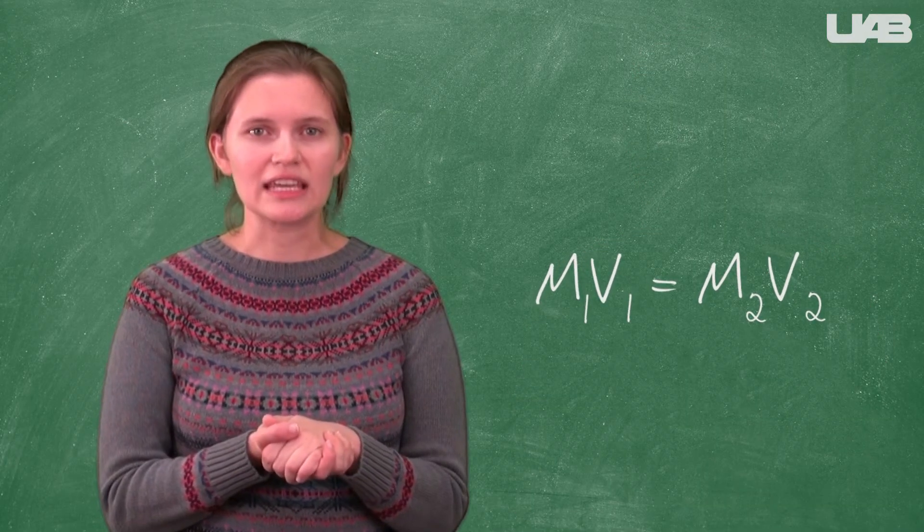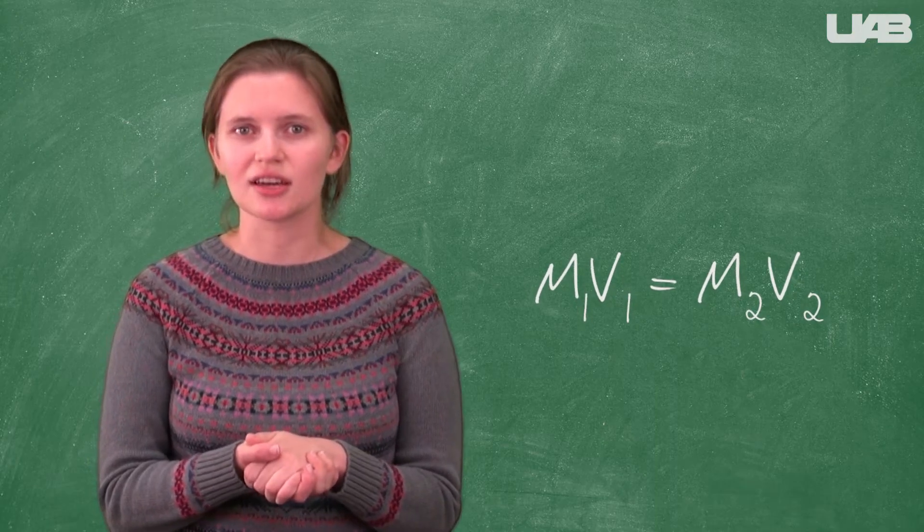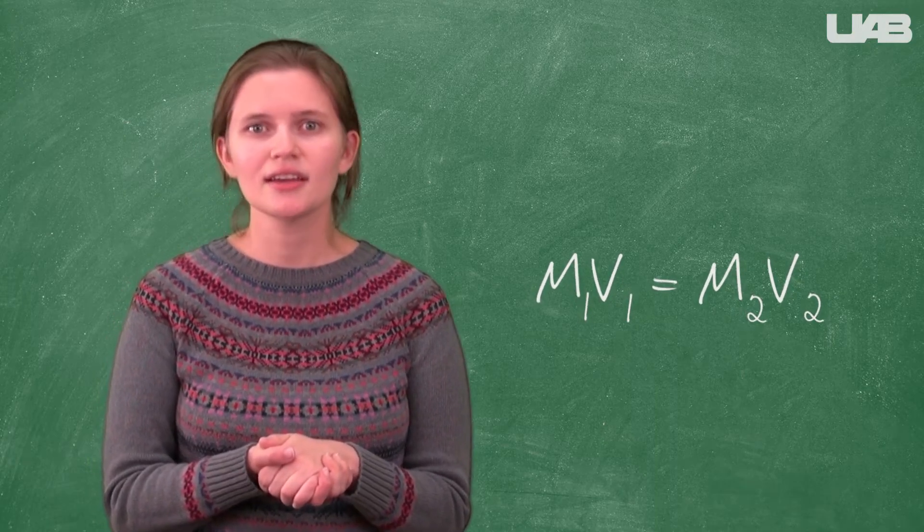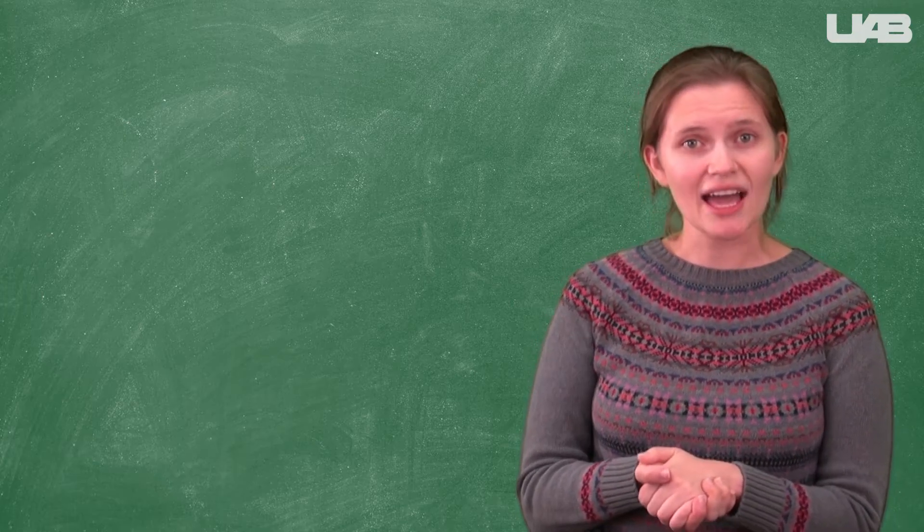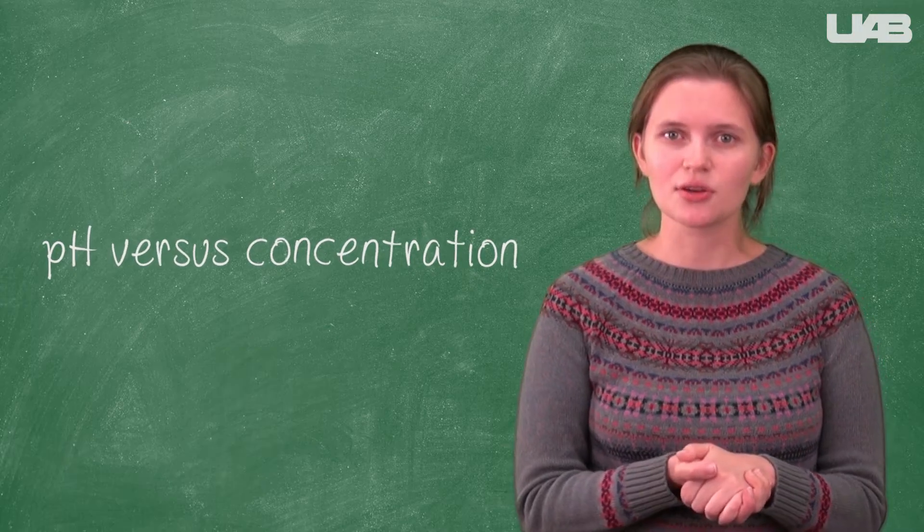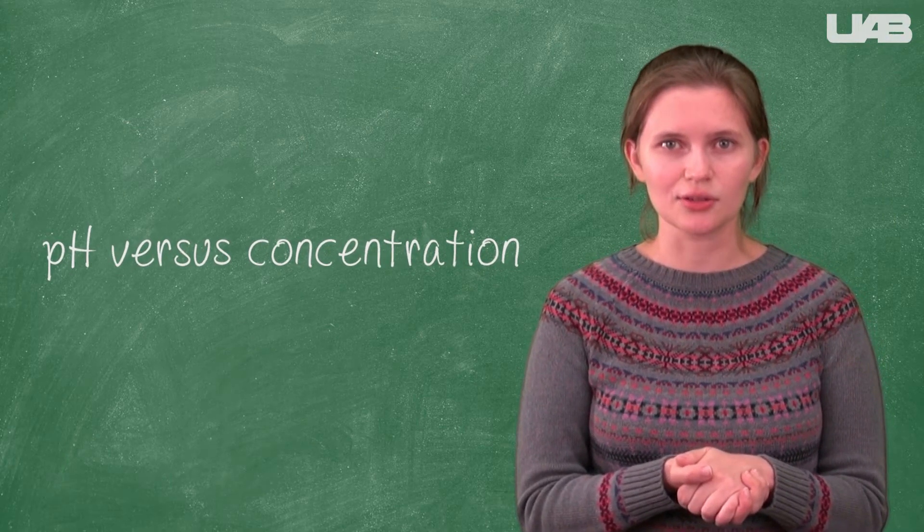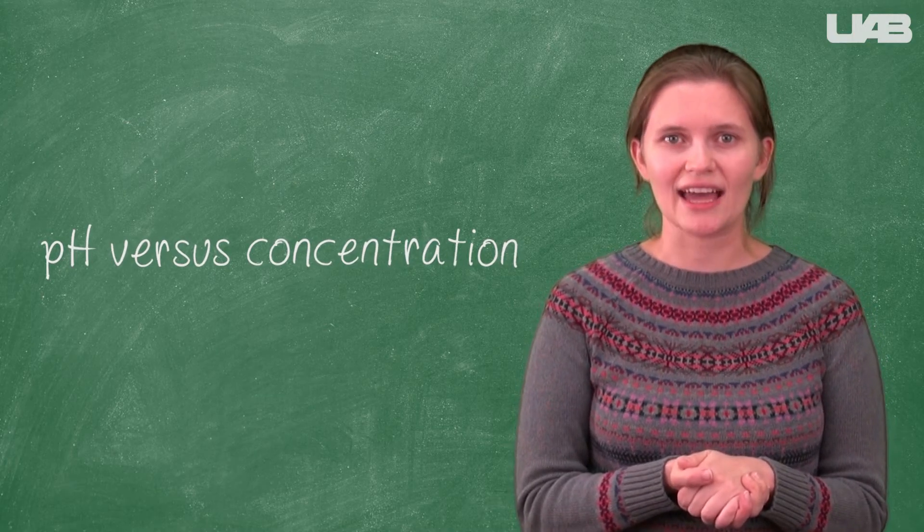Remember that you should use M1V1 equals M2V2 to solve for the concentration of each diluted solution that you make. We will measure the pH of each of the new solutions and use that to prepare a graph of pH versus concentration that shows both how pH changes as the solution is diluted as well as the difference in pH between a strong and weak acid.